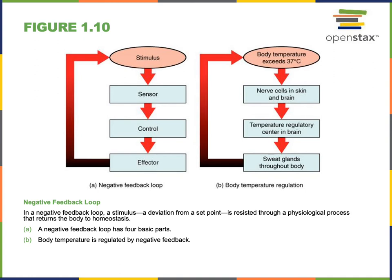If there's a change in that variable, that is a stimulus. For example, if the body temperature exceeds the set point of 37 degrees Celsius, exercise could lead to an increase in body temperature and that would be a stimulus for the homeostatic control mechanism.